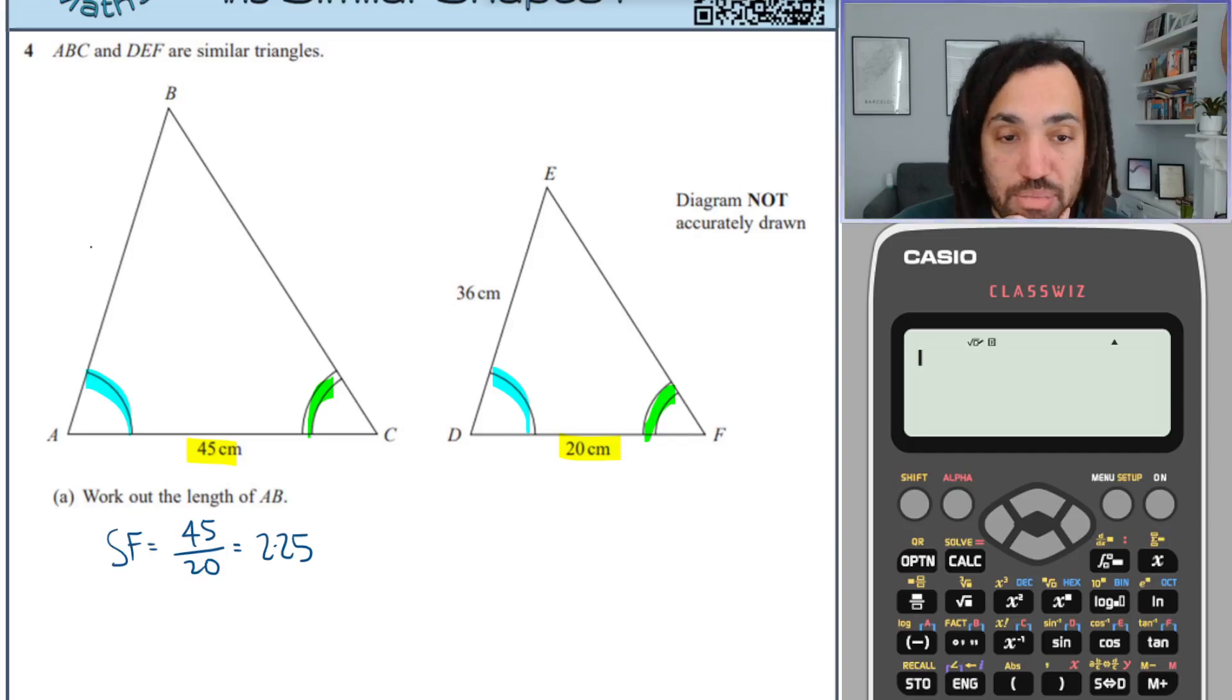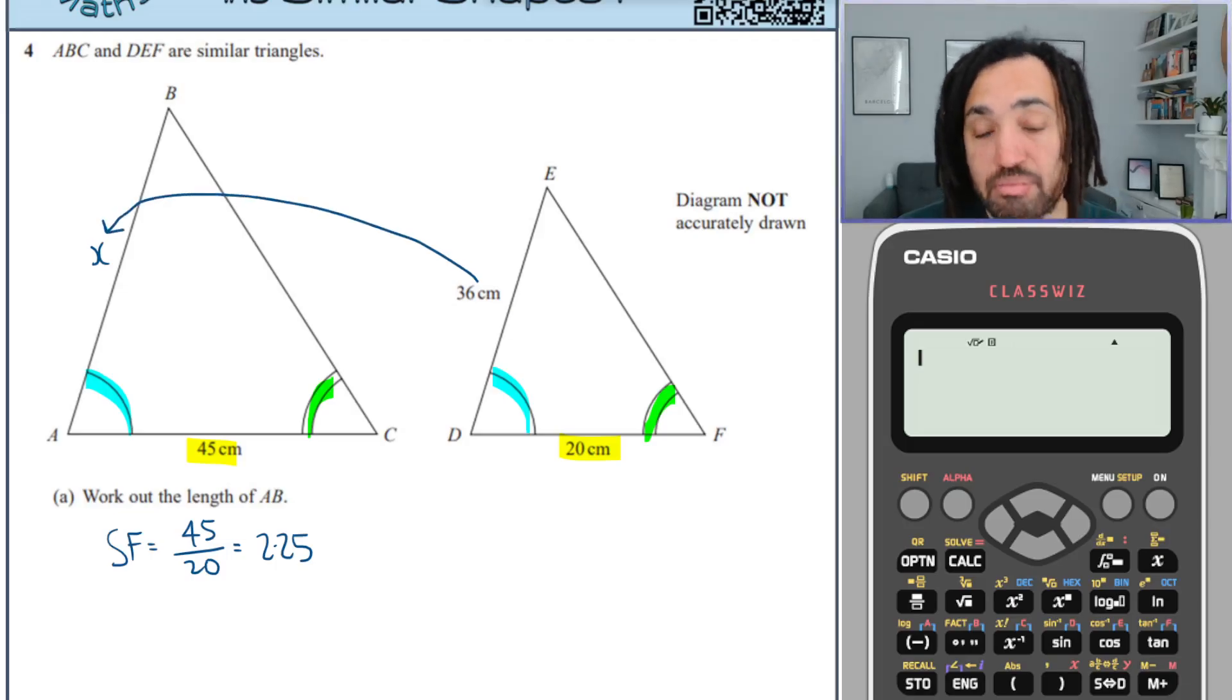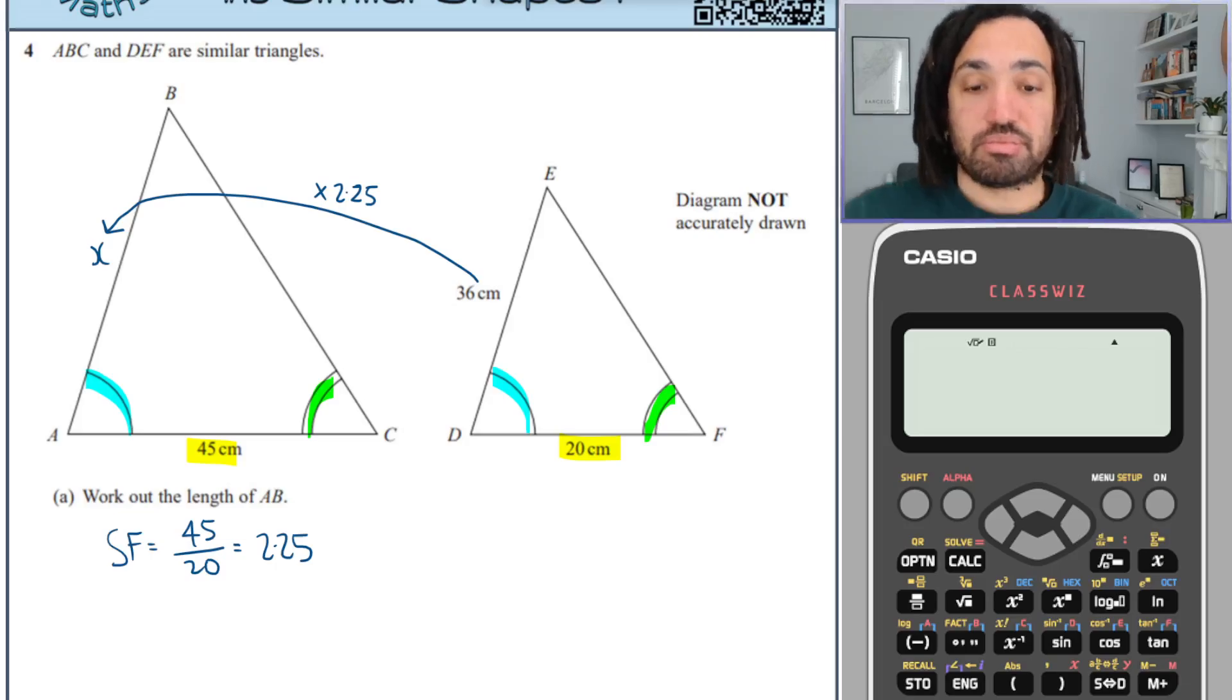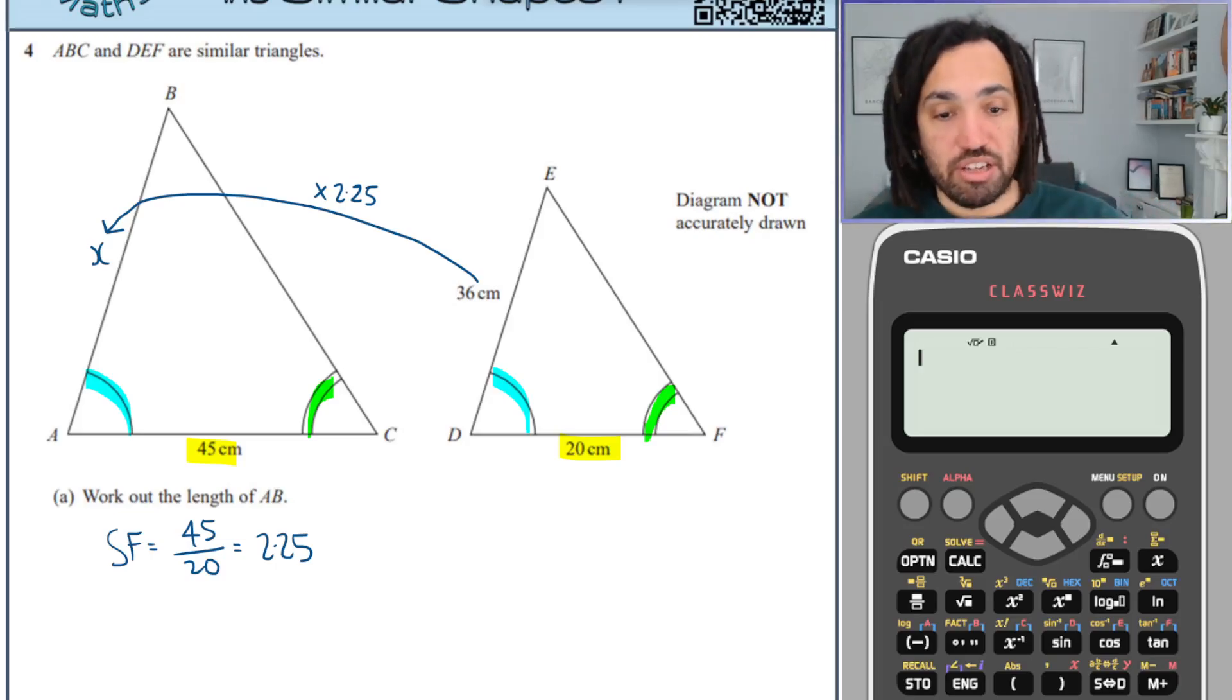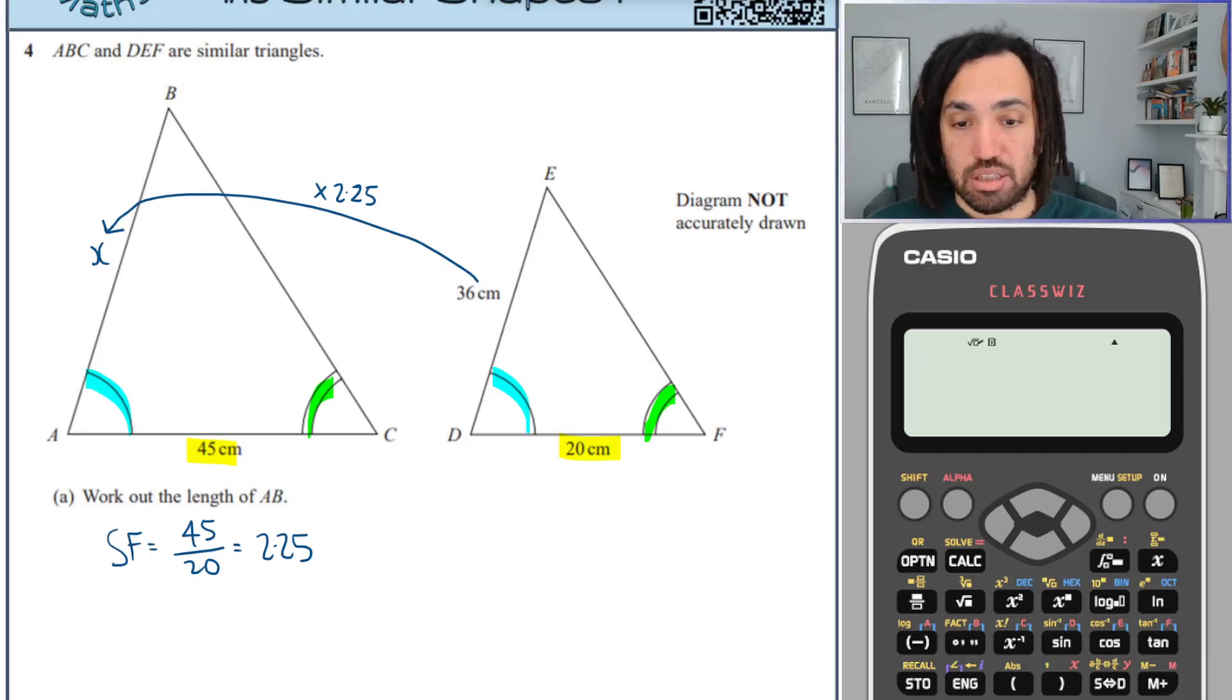Now I want to find AB, which is let's call it x. So this corresponding side is the same side as the one we're looking for. So I need to multiply by the scale factor to go from the smaller one to the larger one. So x or AB is equal to 36 multiplied by 2.25.